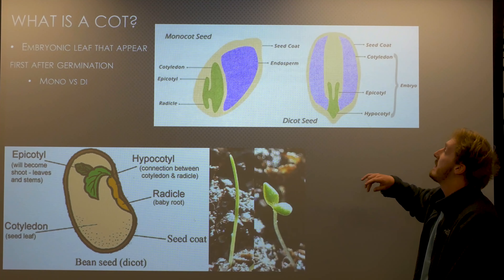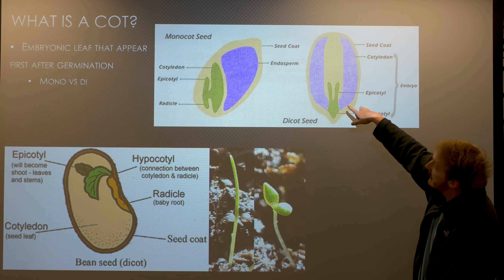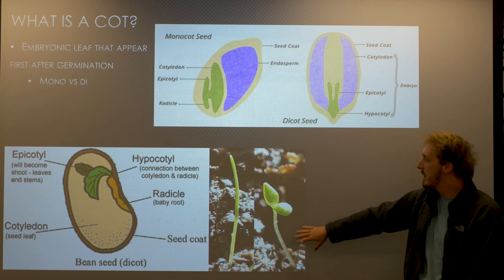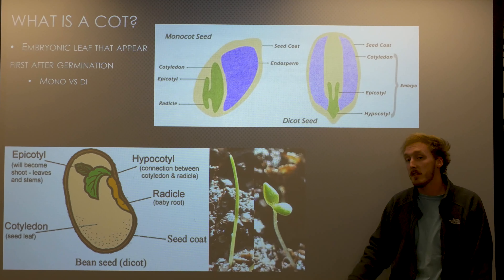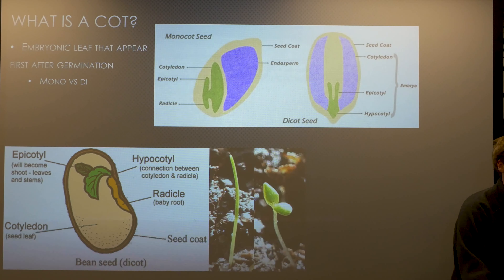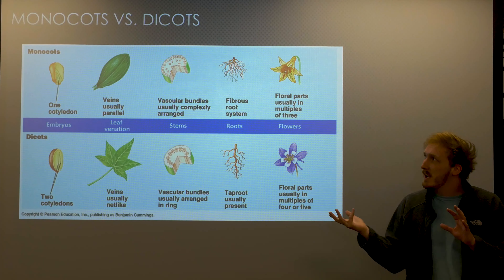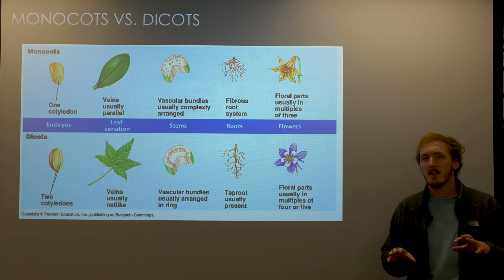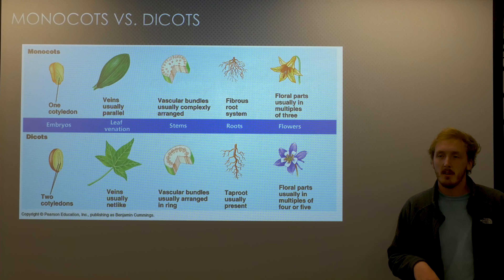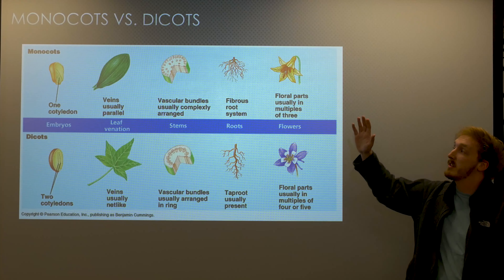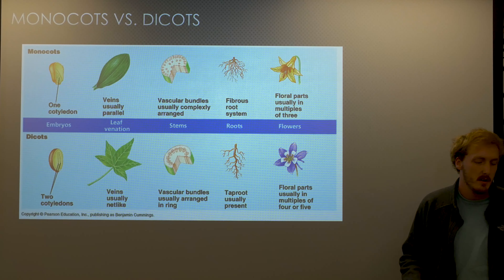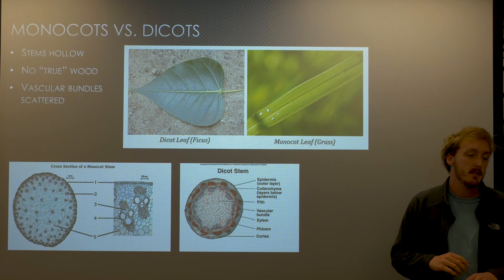We've been talking about cotyledons — what's a monocot, what's a dicot. Cotyledons are embryonic leaves that appear first after germination. If you look back at your fast plants, those first little round leaves that showed up were cotyledons, not true leaves. So if this is your seed, you have your radicle, which is your first root; your hypocotyl, which is the connection between the cotyledons and the radicle; your epicotyl, which is your baby shoot; and then your cotyledons.